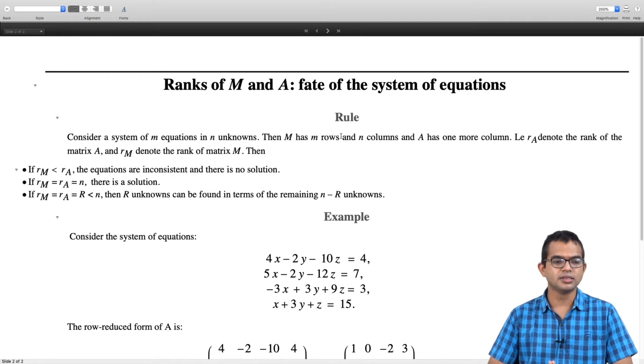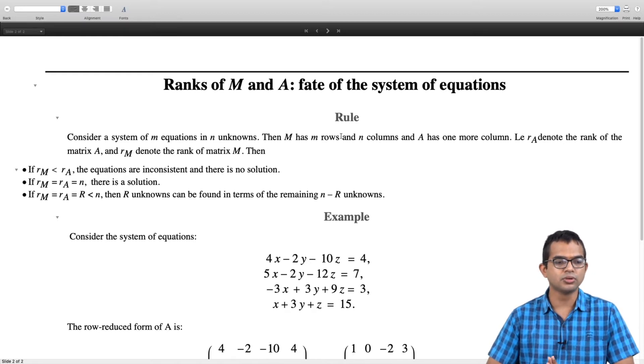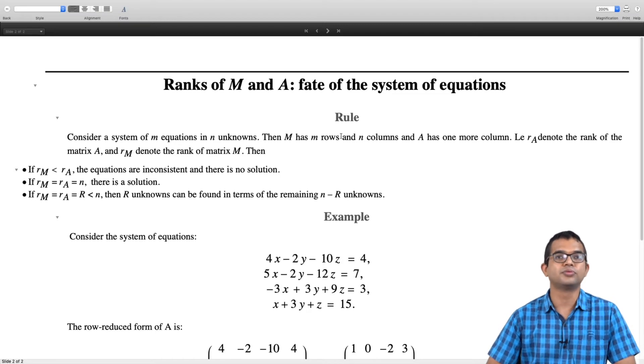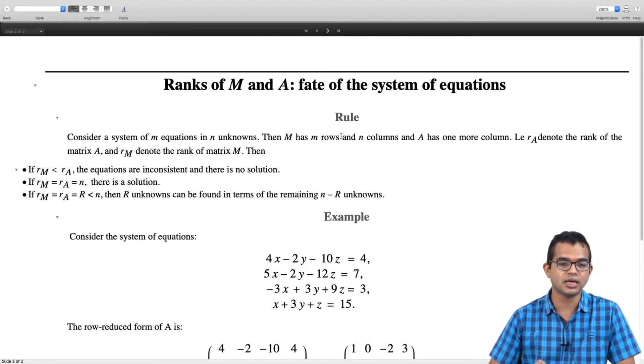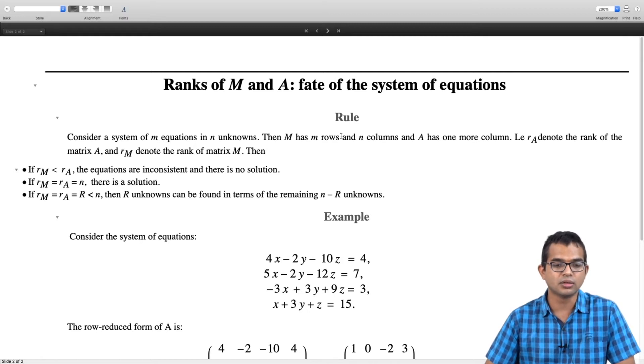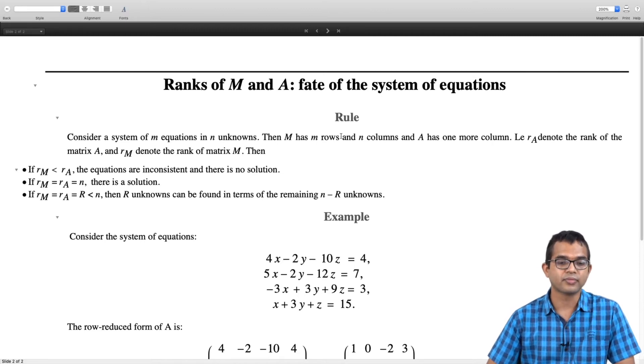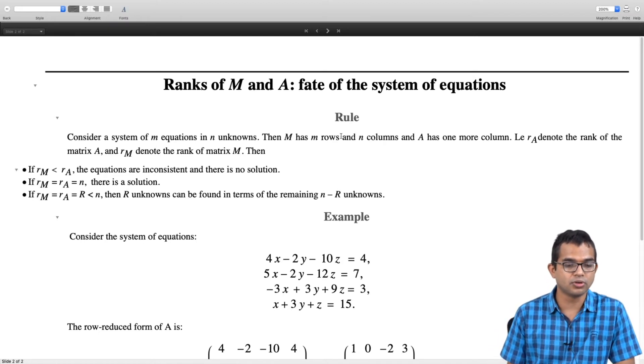Either rM is equal to rA or rM is not equal to rA. If rM is equal to rA, again you have two possibilities. Either rM is equal to rA is equal to n, n is the number of unknowns. So you have also this number of unknowns, n, in addition to the number of equations. So you could have lots of equations and the number of unknowns could be a different variable n. So the question is how are all these related? And what can we say about the solution depending upon all these variables?